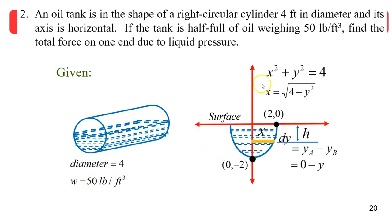Let's try drawing it on a Cartesian plane. Since it's only half full of oil, there's no need to draw the top — let's just draw a semicircle. We draw the points at (2, 0) and (0, negative 2). The horizontal representative element has a length of x and a depth of h.